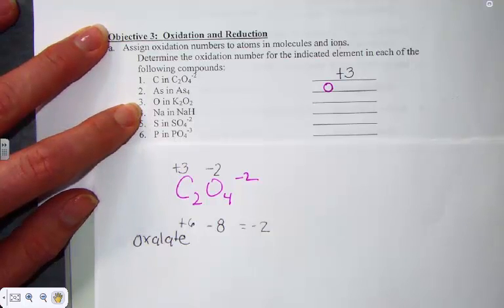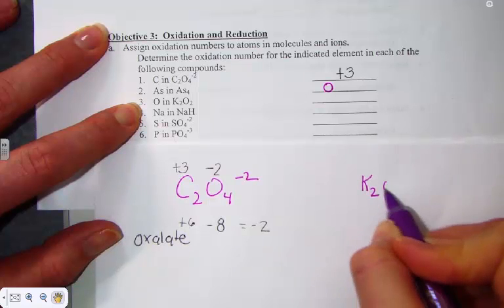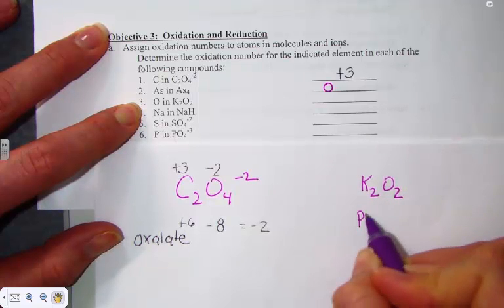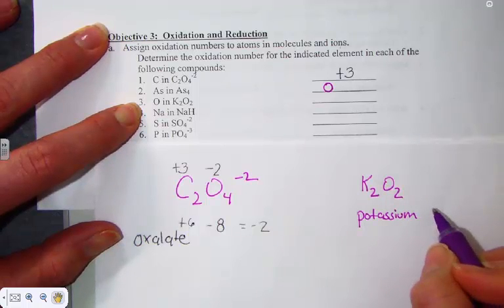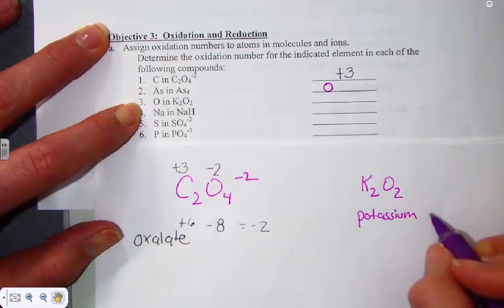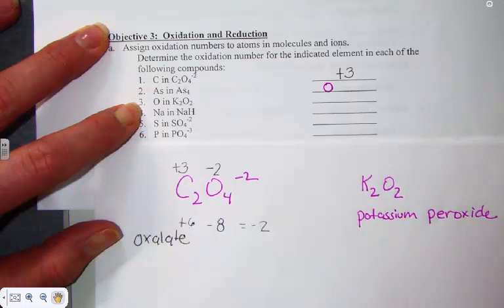Number 3 says, let's find O in K2O2. K2O2 is indeed a rule breaker for the oxygen rule. Oxygen is always a minus 2 unless it's in a peroxide form, as it is in this example.